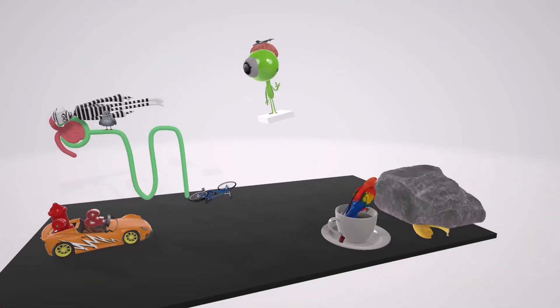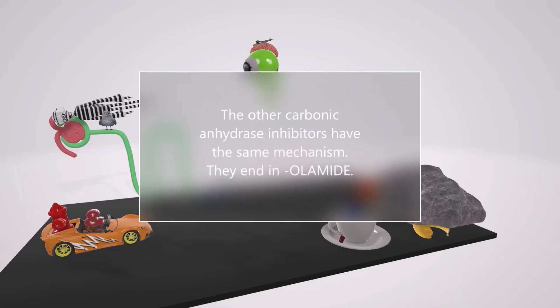In this scene we're talking about acetazolamide, but the truth is this same mechanism of action applies to the other carbonic anhydrase inhibitors. We can remember that they all end in zolamide: dorzolamide, methazolamide.